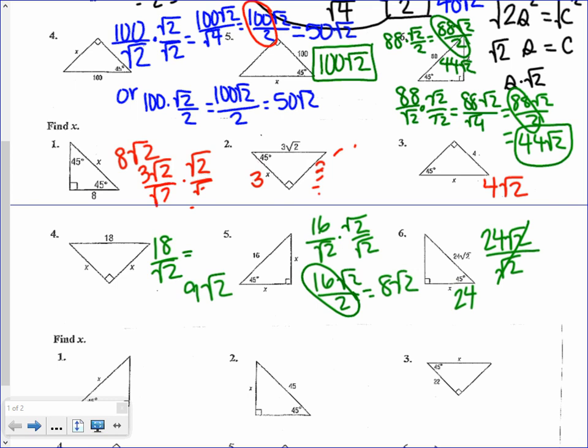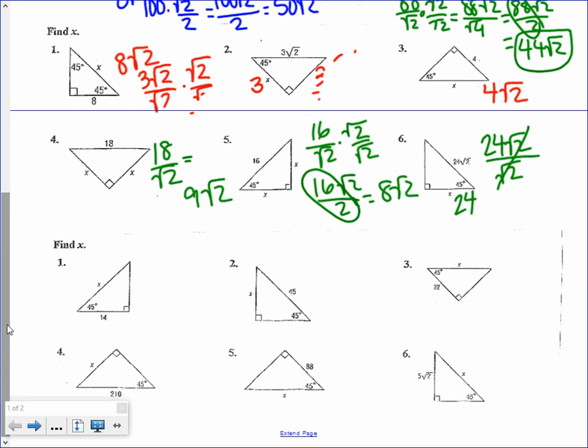Should you be showing lots of work? If you need to, sure. The goal is eventually to look at these and know the answer without much work. One option if you struggle to remember whether to multiply or divide by √2: all 45-45-90 triangles are similar to each other in a ratio of S to S to S√2, or with S equal to 1, a ratio of 1 to 1 to √2.